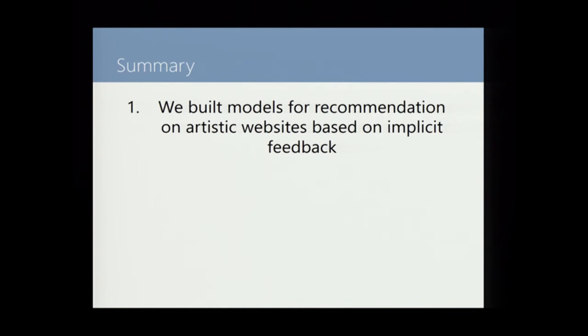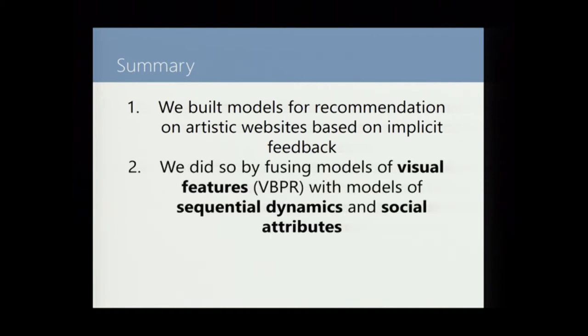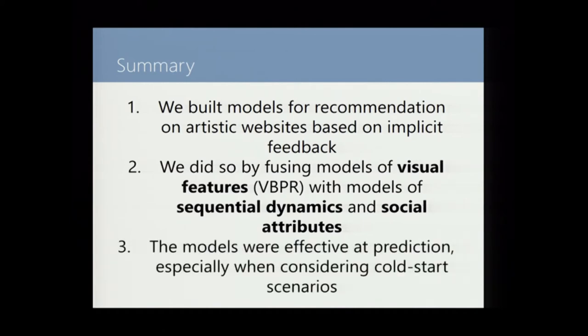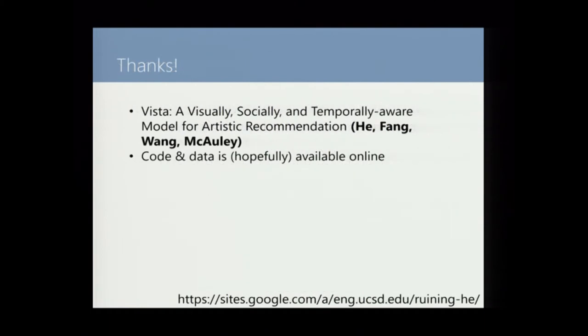Just to quickly summarize and I'm almost out of time. We've tried to build these models for artistic websites based on implicit feedback like likes and appreciates. The basic idea was to build a model that's aware of these three components: visual features, social features, and sequential dynamics. Visual features and sequential dynamics are kind of already well understood, so we wanted to combine those aspects and look at the sort of new take on social attributes where the people who create content are actually the same people evaluating things. And it's especially effective for cold start situations. And like I say, it's mainly the work of my student Ruining here. And hopefully all of our code and data is available online by now. Thanks.